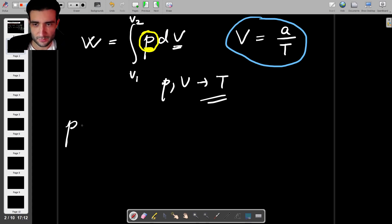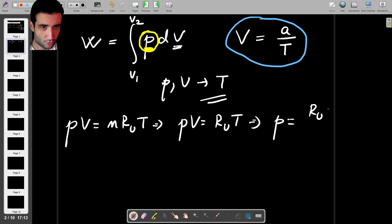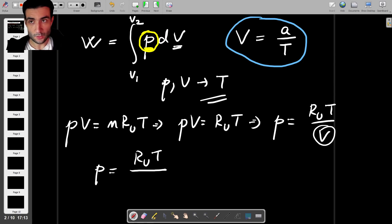So we have PV is equal to N RU times T or PV is equal to RU times T because remember we have just one mole of gas in the question, which means that the pressure P is just RU T over V. Or we can then say that pressure is RU T. So we have V in here that we want to get rid of and we know V is A over T so this is just A over T. So if we flip the bottom fraction this is RU over A times T squared.